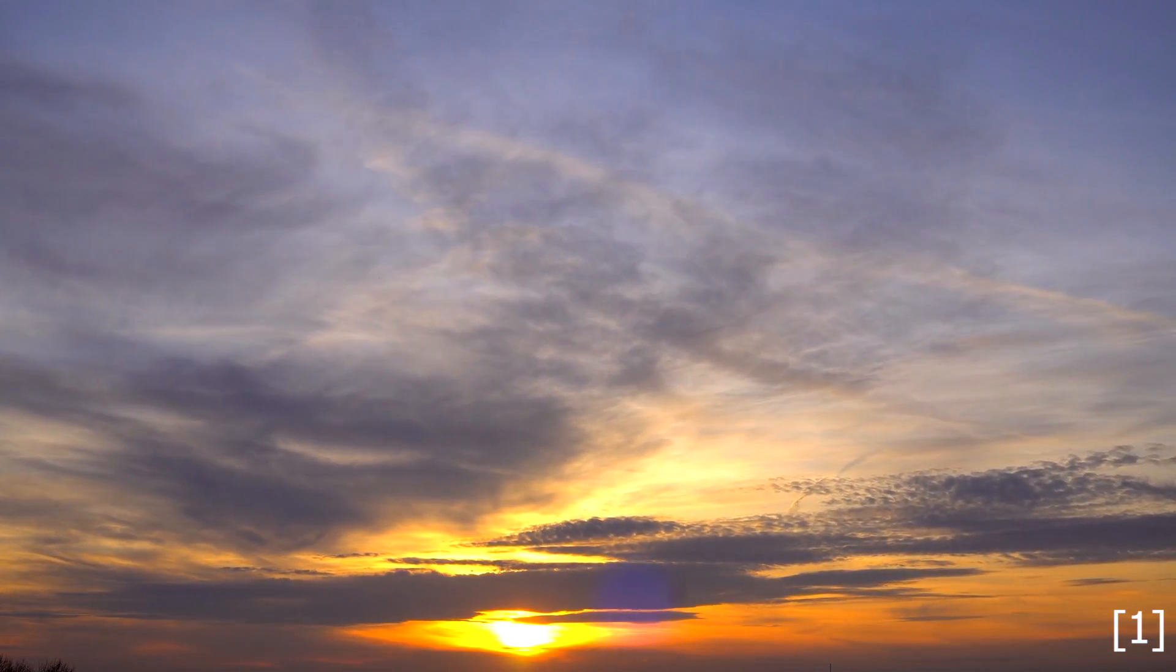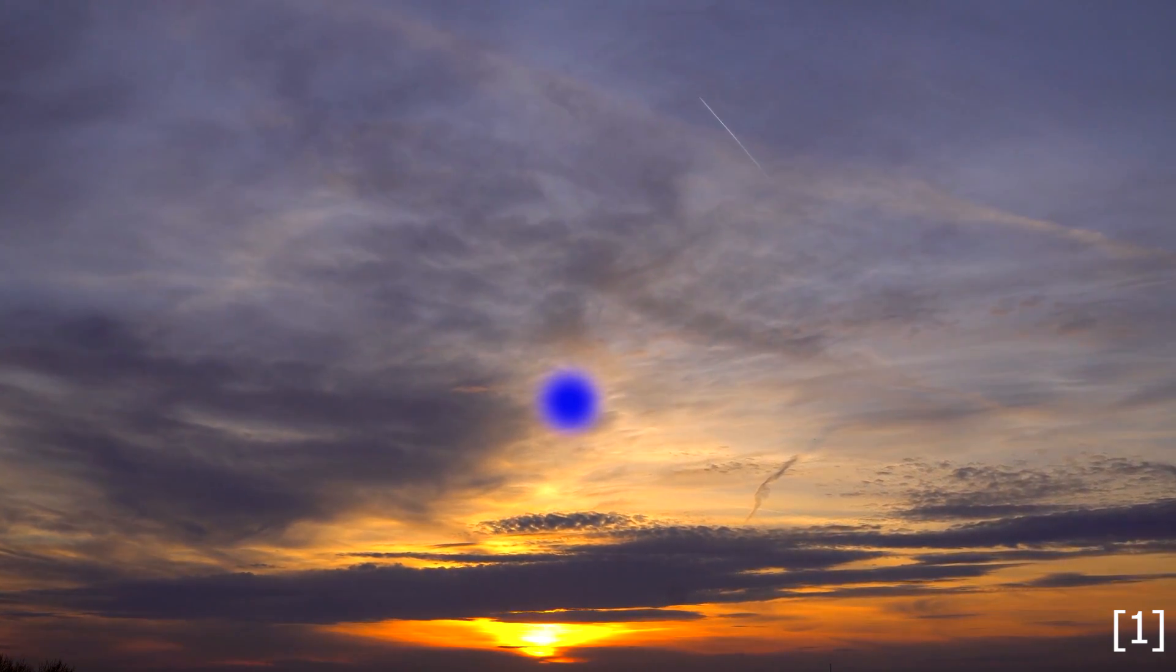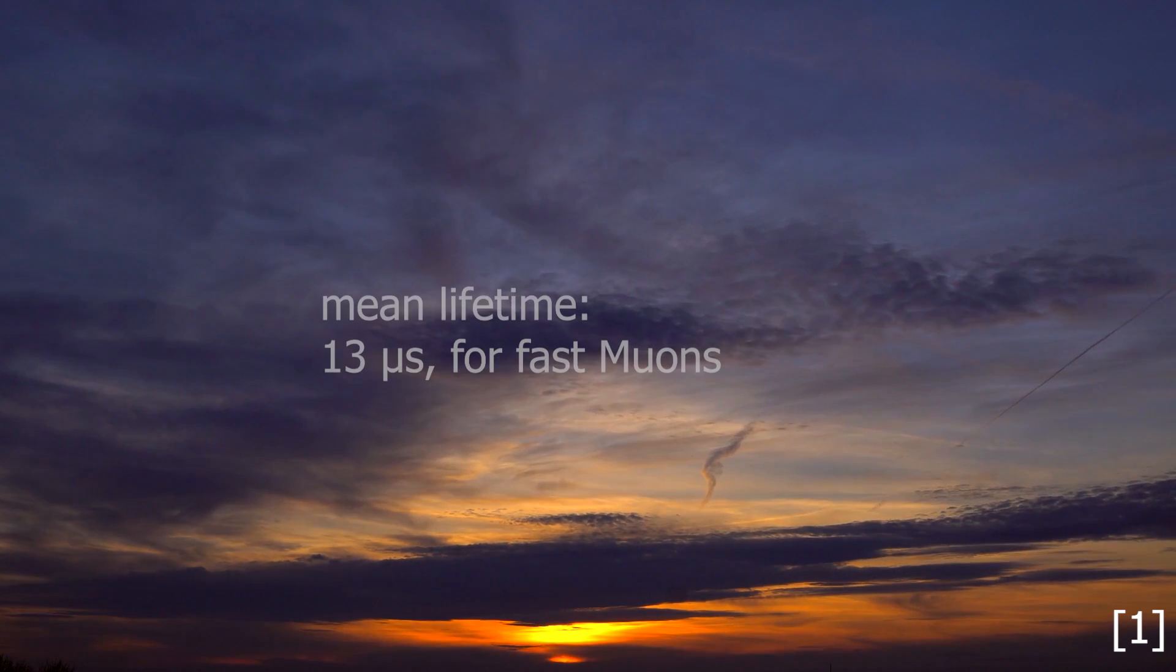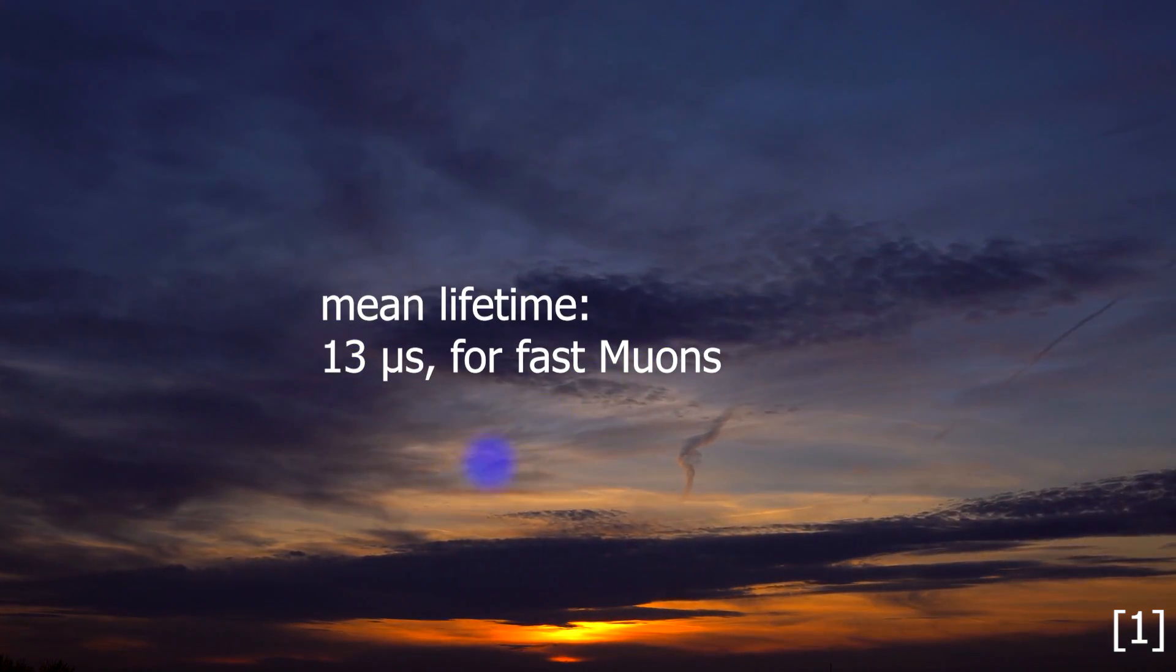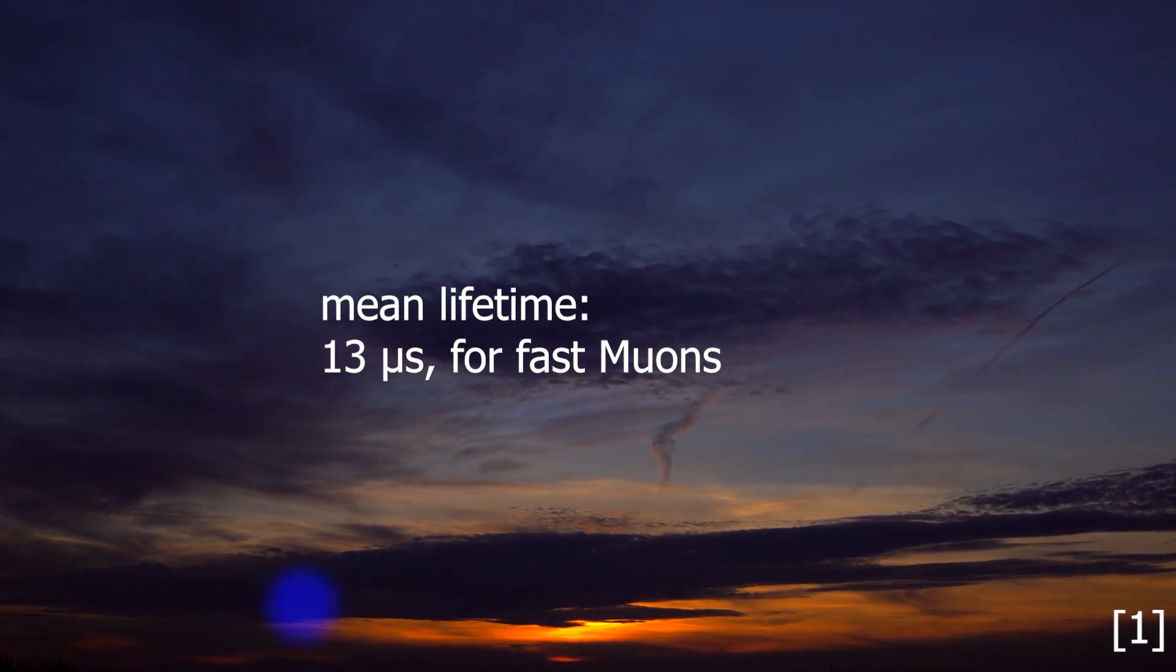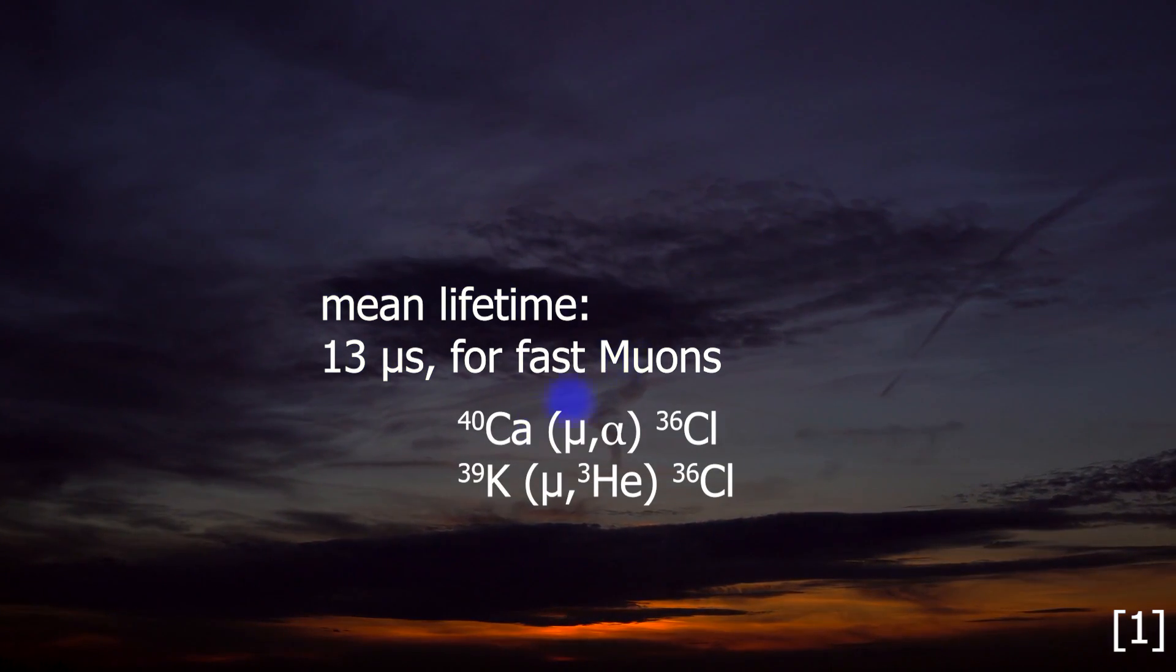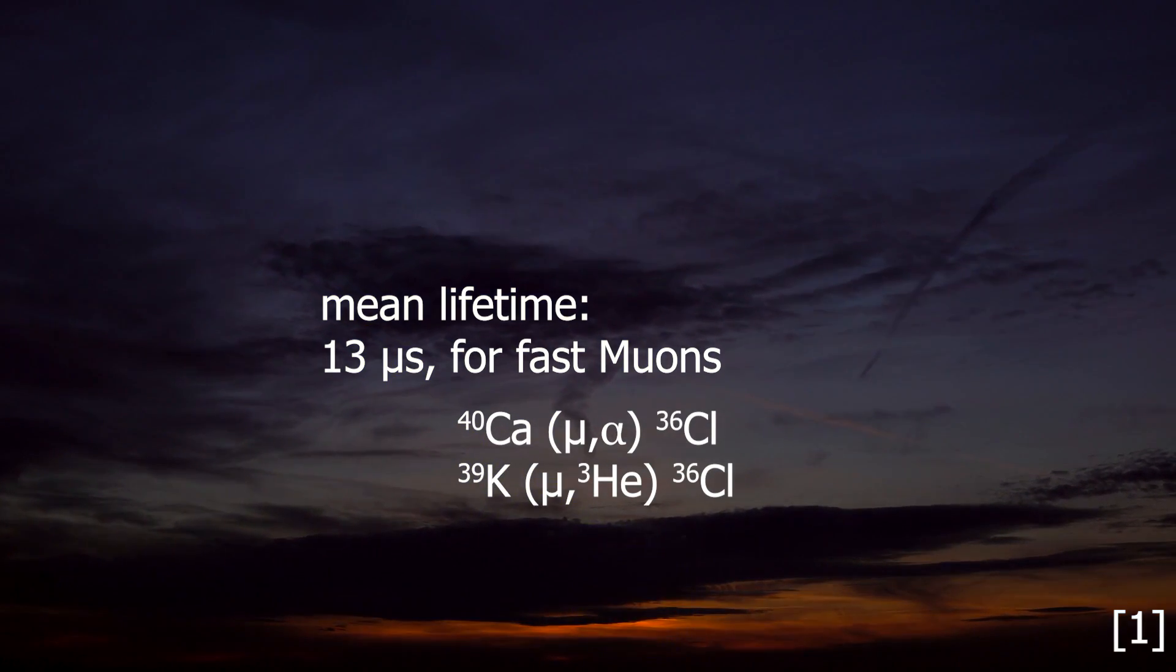These particles zoom through the atmosphere at 99.5% of the speed of light and experience time dilation. So the average lifetime of stationary muons is 2.2 microseconds. For fast muons, it's then 13 microseconds, which is enough at their speed to hit the surface of the Earth in greater quantities and then cause a mu-alpha reaction in Calcium-40.